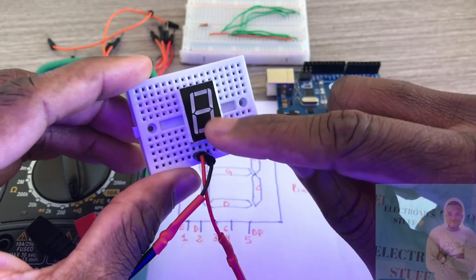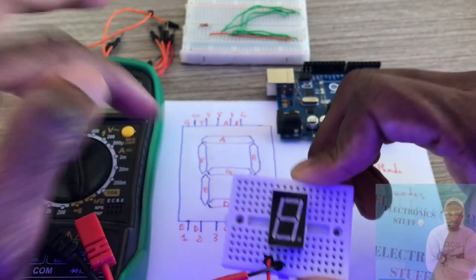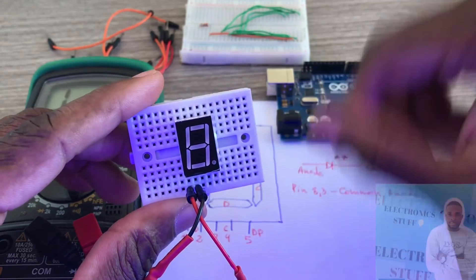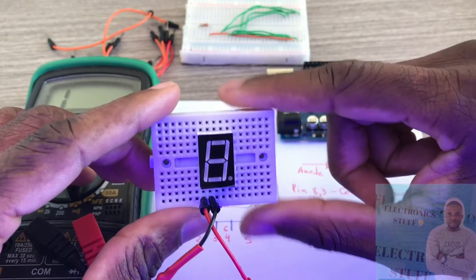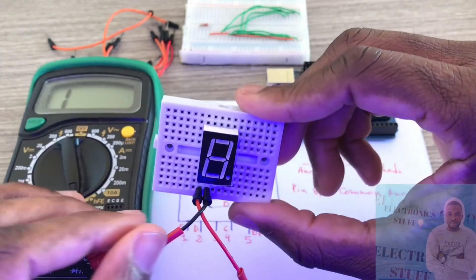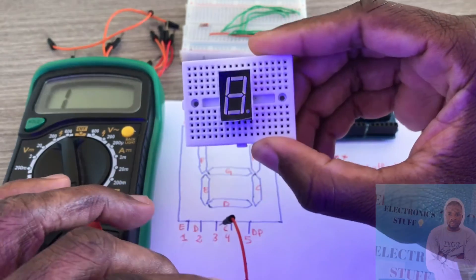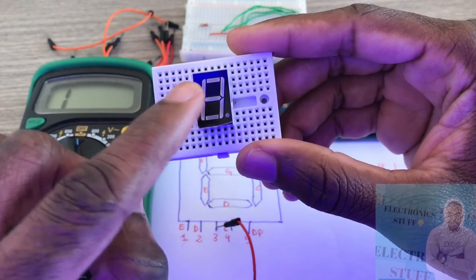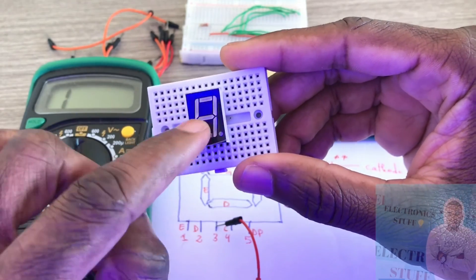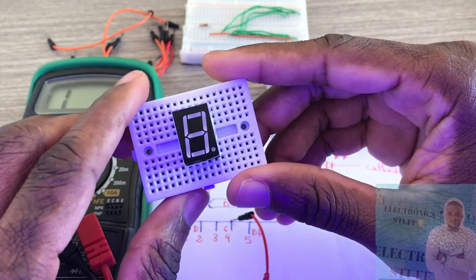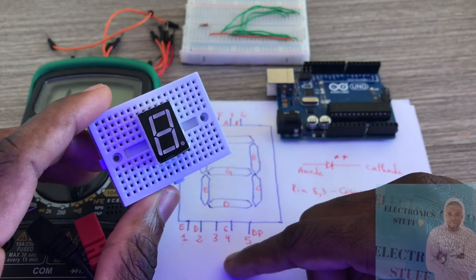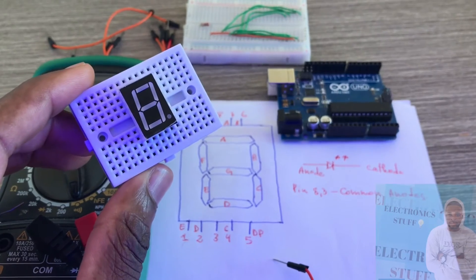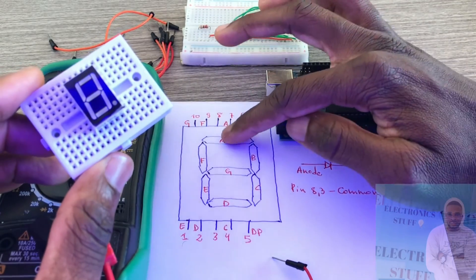If I switch the leads — red lead on the other side — the letter does not turn on, because this is a common anode seven segment display. This display has eight LEDs total.